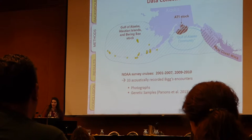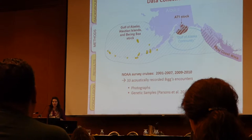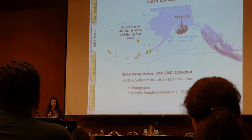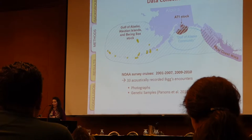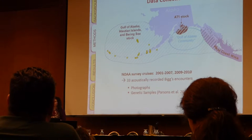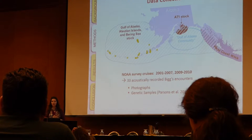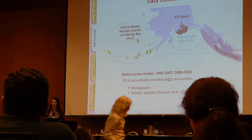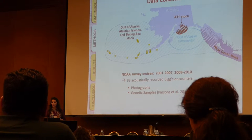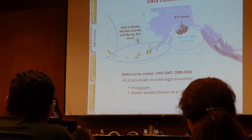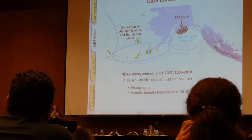In an effort to investigate this, NOAA Fisheries conducted a number of killer whale dedicated surveys between 2001 and 2010. The yellow dots on the map indicate those 33 occurrences where they found Biggs killer whales and were able to collect acoustic recordings. At the same time, photographs were taken for photo ID work, and genetic samples were collected in the form of blubber biopsies. The genetic samples were analyzed and results published by Parsons et al. 2013, finding that based on mitochondrial DNA and nuclear microsatellite markers, there appeared to be a number of genetically distinct subpopulations within the GAB stock.